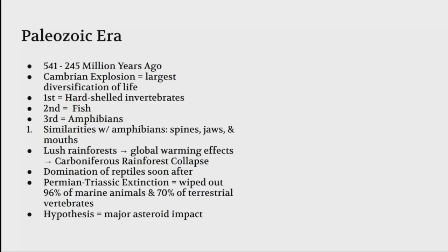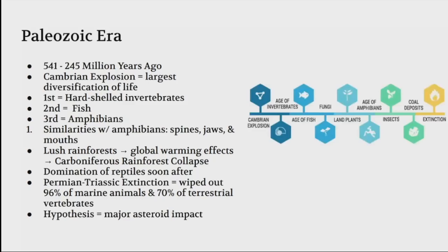We have the lush rainforests, and they were thriving. Then there's global warming effects, also known as the carbon rainforest collapse. Because of the rainforest collapse, there were coal deposits that were burning. The domination of reptiles comes out, and then we have the Permian-Triassic extinction, which wiped out 96% of marine animals and 70% of terrestrial vertebrates. The hypothesis is probably a major asteroid impact.